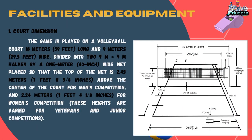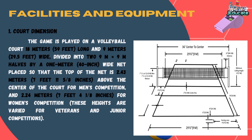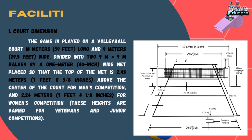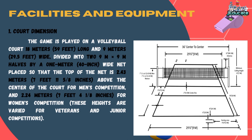Facilities and Equipment. Number 1, Court Dimension. The game is played on a volleyball court 18 meters (59 feet) long and 9 meters (29.5 feet) wide, divided into two 9-meter by 9-meter halves by a 1-meter (40-inch) wide net, placed so that the top of the net is 2.43 meters (7 feet 11 and 5/8 inches) above the center of the court for men's competition, and 2.24 meters (7 feet 4 and 1/8 inches) for women's competition. These heights are varied for veterans and junior competitions.